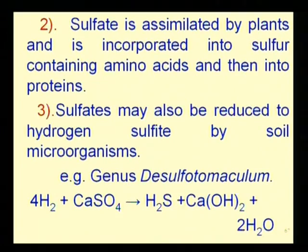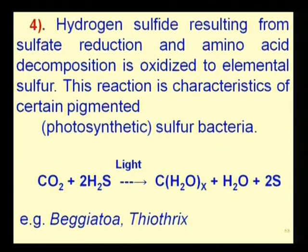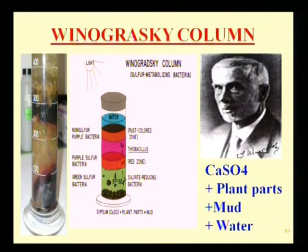Sulfate may also be reduced to hydrogen sulfide by soil microorganisms like Desulfotomaculum. The reduced H2S often causes further decomposition and reduction of elemental sulfur with the help of photosynthetic organisms like Beggiatoa and Thiothrix, returning elemental sulfur back to the atmosphere.